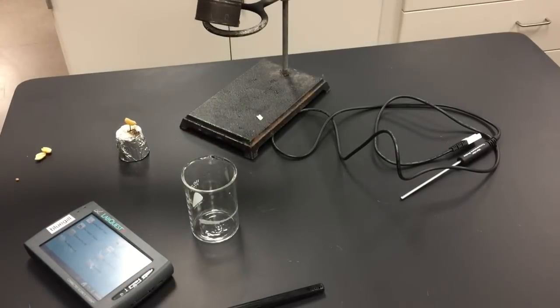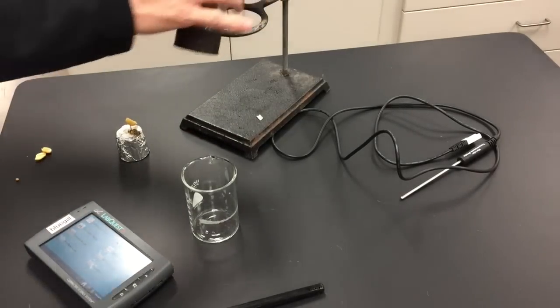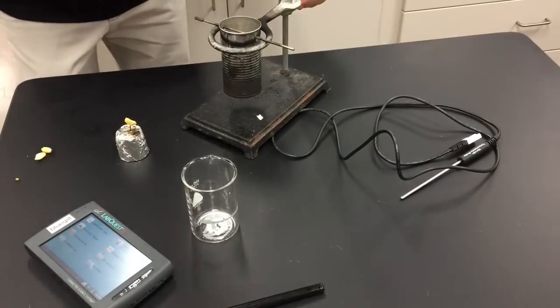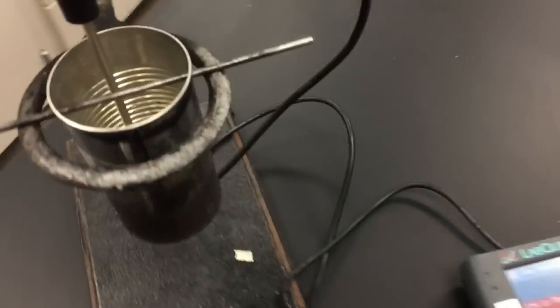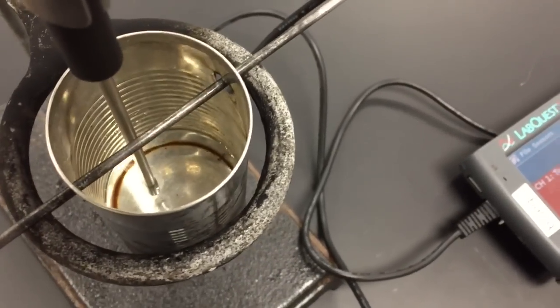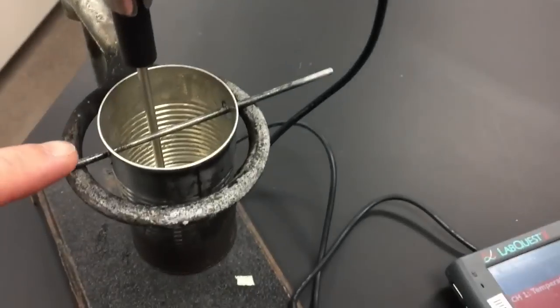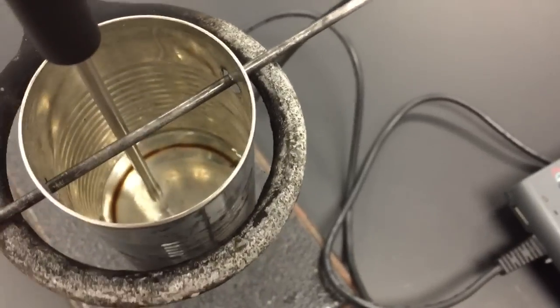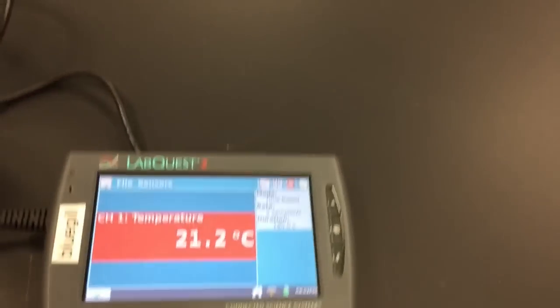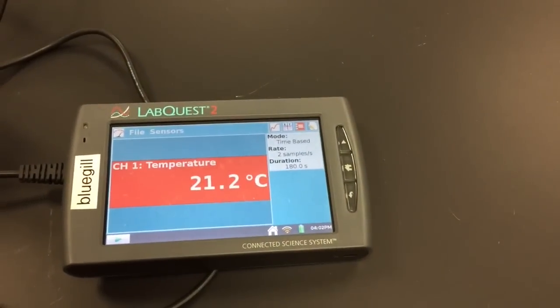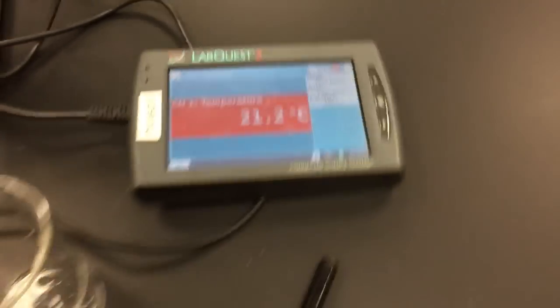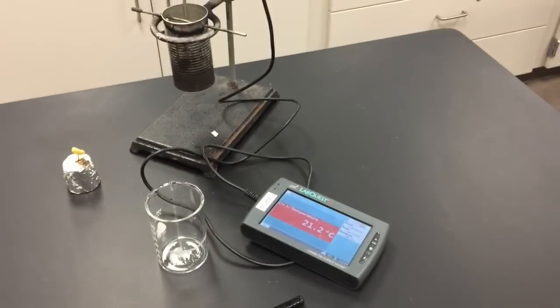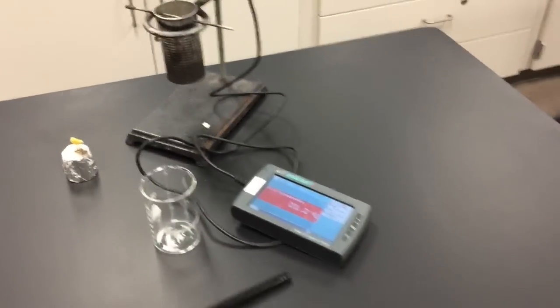I positioned the temperature probe with the clamp so that the end of the temperature probe, the tip of the temperature probe, is underwater but not touching the bottom of the metal can. Then I can write down my starting temperature of the water: 21.2 degrees Celsius.